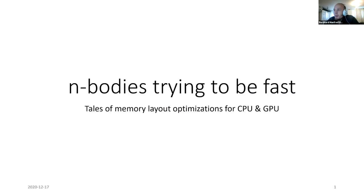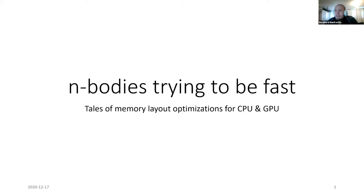I'd like to talk about an n-body simulation. I named the talk 'N-Bodies: Trying to be Fast' because that's what I tried to do most of the time. I had this n-body simulation and I tried to make it fast. There are various ways to do optimizations, many of which involve changing the actual algorithm — employing different computations or different data structures. But I mostly tried to retain the behavior of my program, using the same computations.